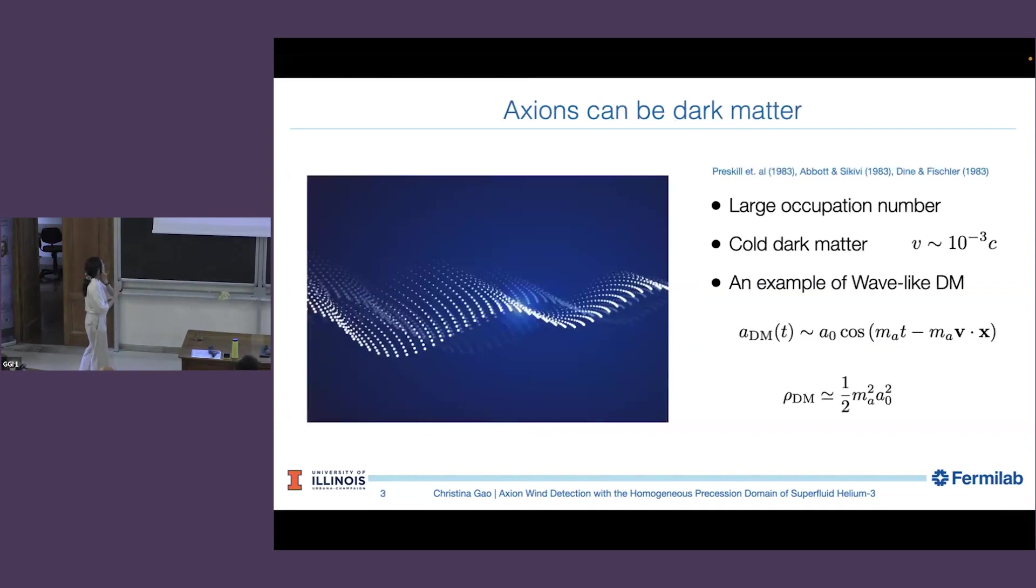Just to recap some basic features of this wave-like dark matter: there's a large occupation number, and it's cold dark matter. The local dark matter is virialized with the Milky Way galaxy, with a virial velocity around 10 to the minus 3C. So it's very non-relativistic. However, it still has a non-zero velocity, and this is the feature we're going to take advantage.